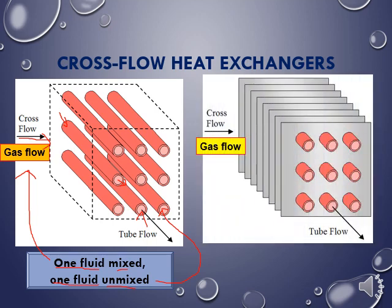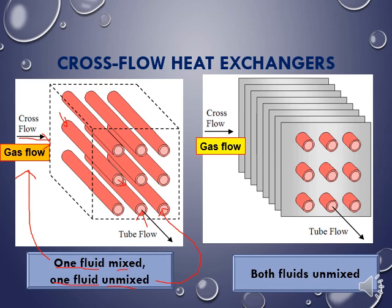The other type is called both fluid unmix. For the gas flow here, it does not mix because it consists of buffers that separate the flow according to the area or space provided. So that's why it is called both fluid unmix — the fluid inside the tubes is unmixed because they are in separate tubes, and the gas flow is also unmixed because of the buffers separating it into distinct regions.